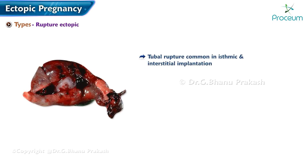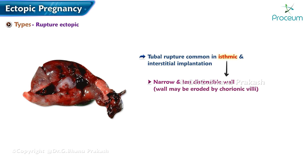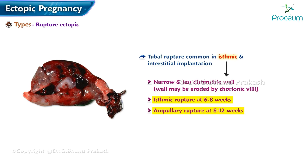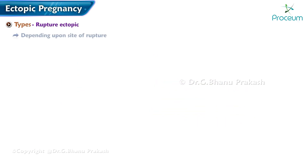Tubal rupture is predominantly common in isthmic and interstitial implantation, as the isthmic portion is narrow and the wall is less distensible, making it easily eroded by chorionic villi. Isthmic rupture usually occurs at six to eight weeks, ampullary at eight to twelve weeks, and interstitial at about four months.